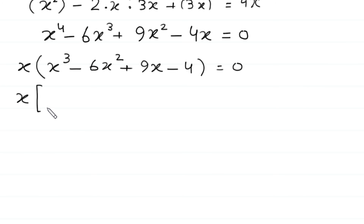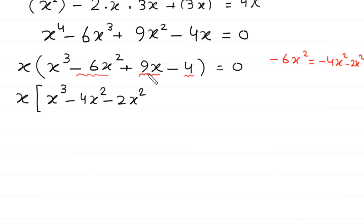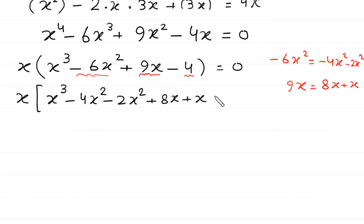Now, because here we have the constant term 4, we split this negative 6x squared as negative 4x squared minus 2x squared. We write x cubed as it is, split negative 6x squared as negative 4x squared minus 2x squared. Because 9x is not directly divisible, we split 9x as 8x plus 1x, and write minus 4.